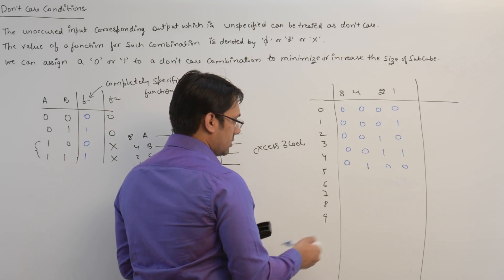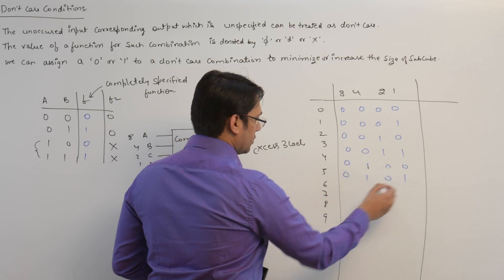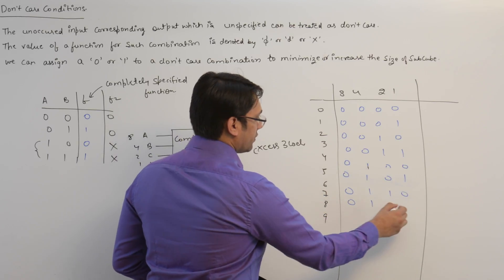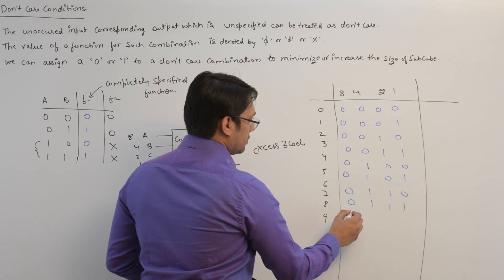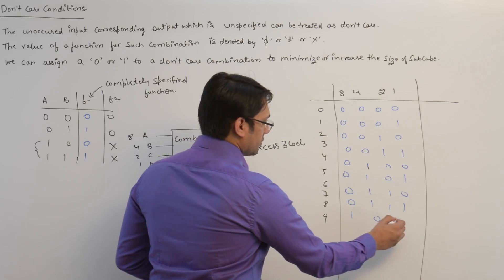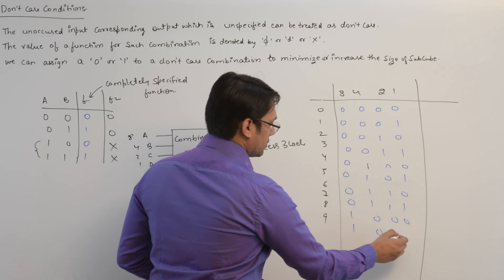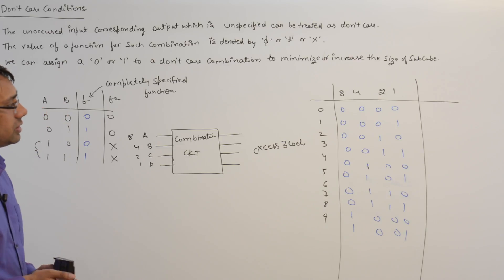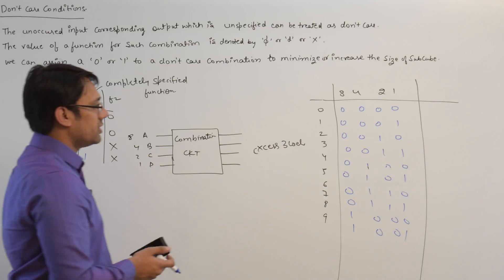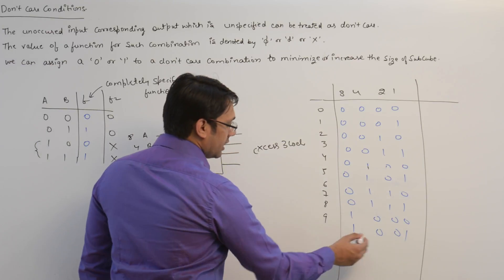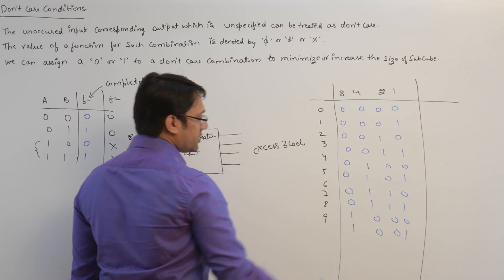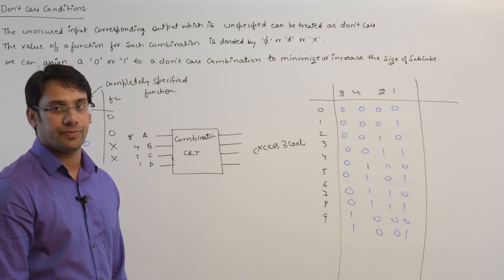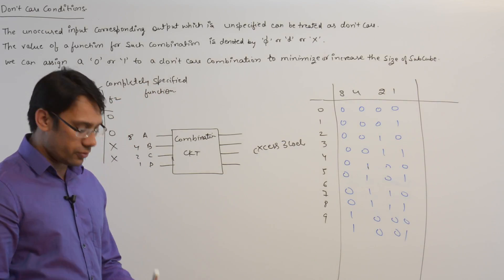Continuing the 8421 representations, we have combinations such as 0101, 0110, 1000, 1001, and so on. Since these are 4-bit codes, there are a total of 16 combinations possible with four bits.